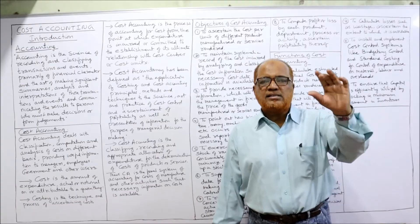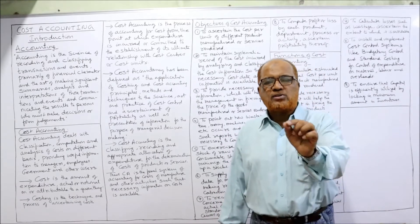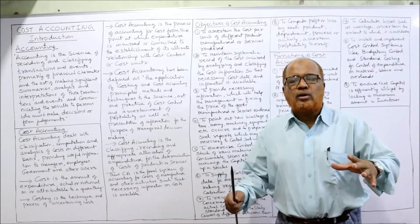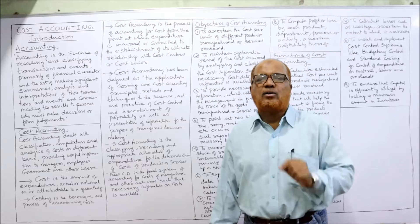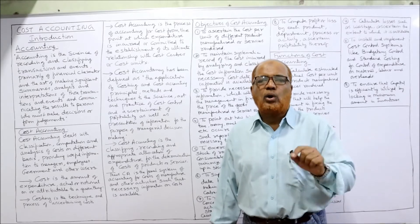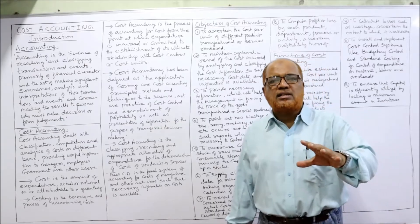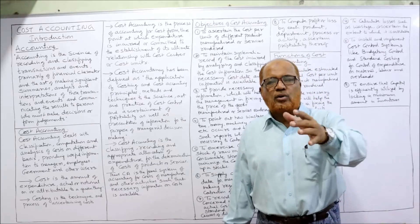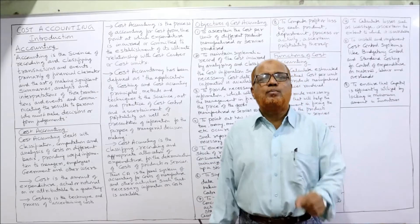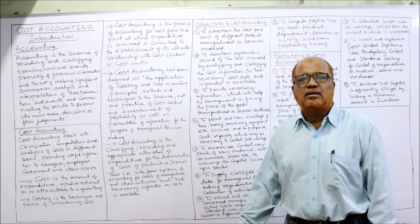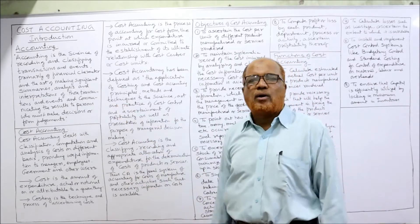Financial accounting is concerned only with the preparation of profit and loss account and balance sheet — that is, the income statement and statement of financial position. Cost accounting is that branch of accounting concerned with ascertainment and control of cost. Management accounting is concerned with processing information from cost accounting and financial accounting and supplying this information to management so they can take prudent decisions.